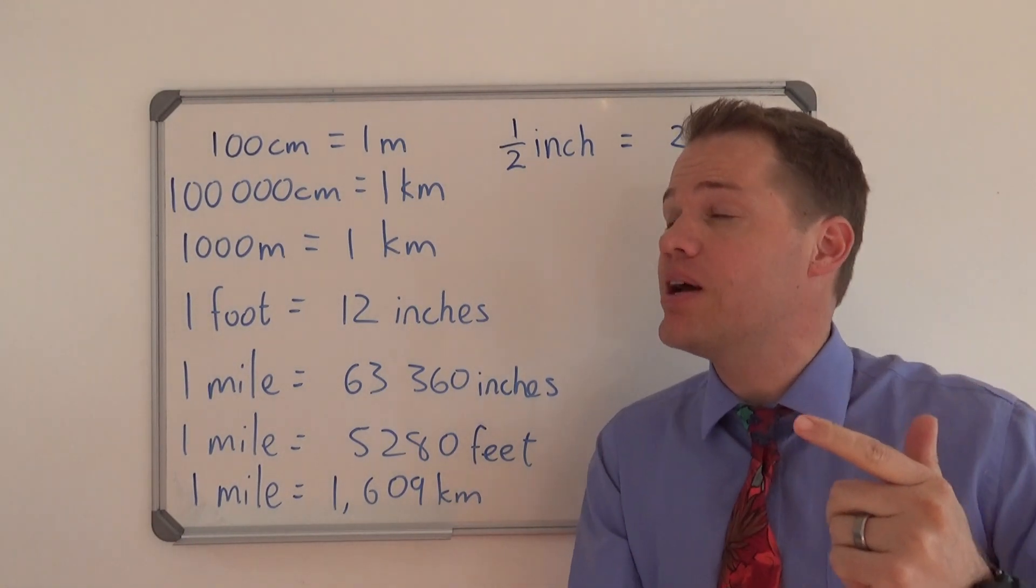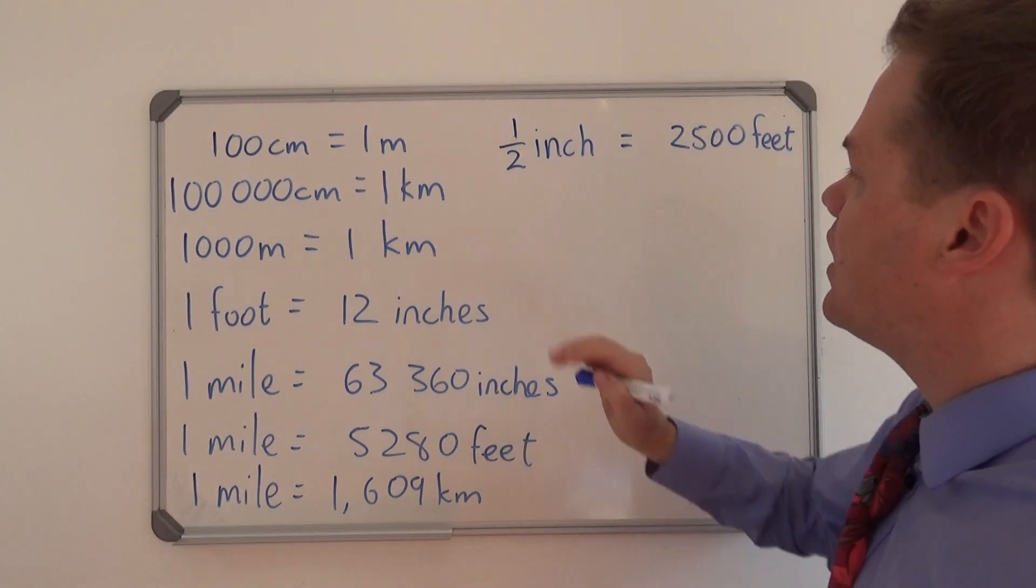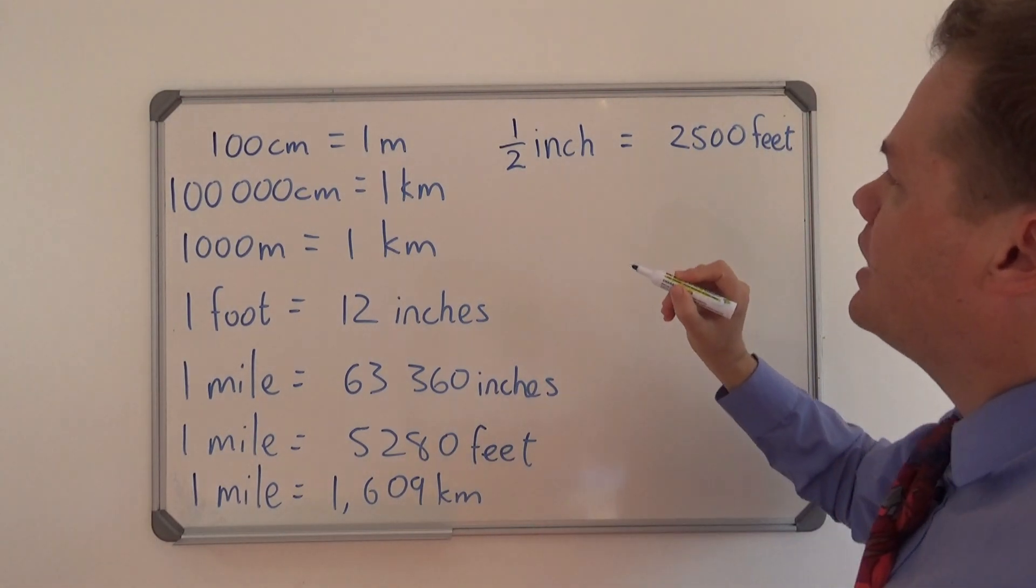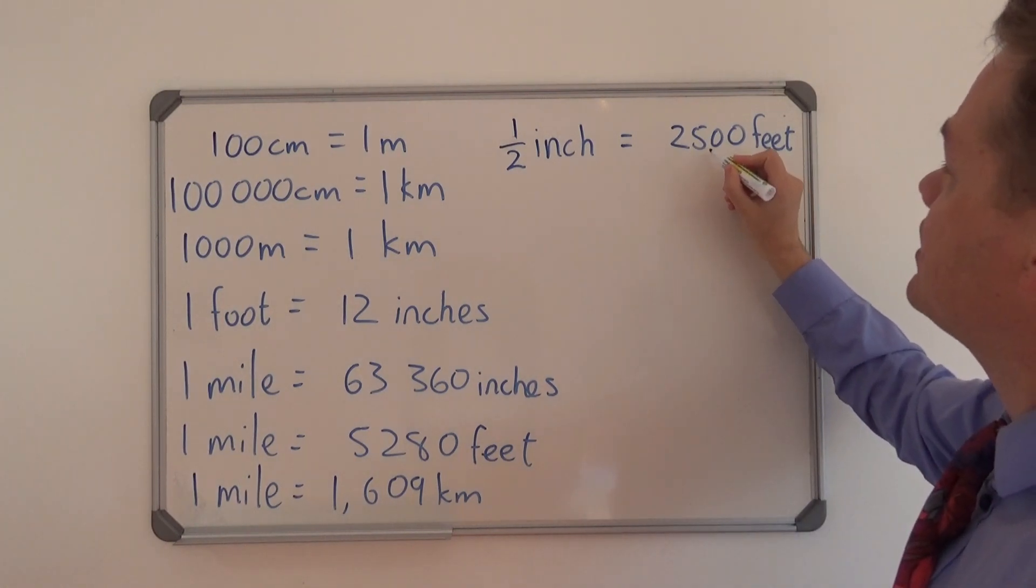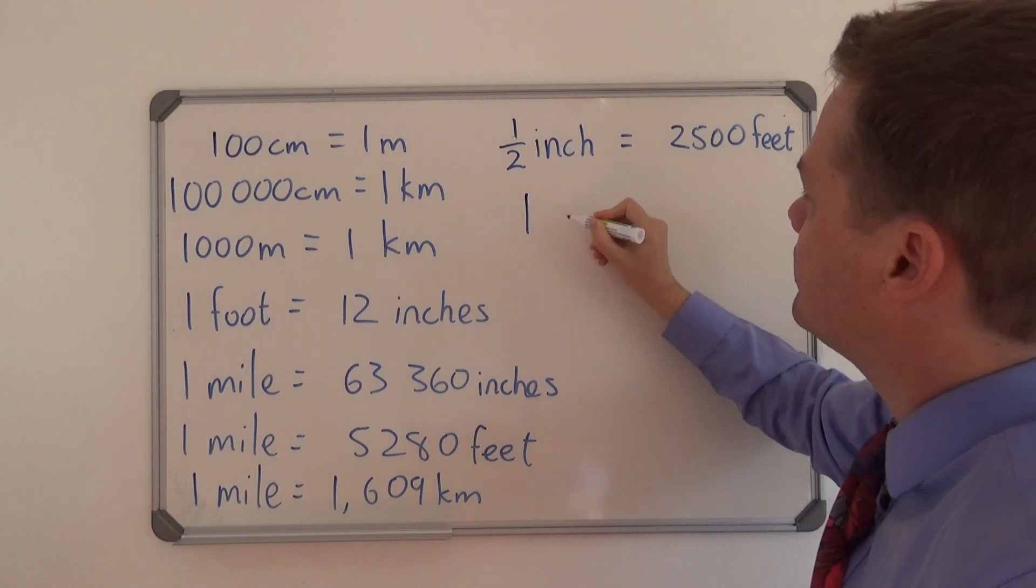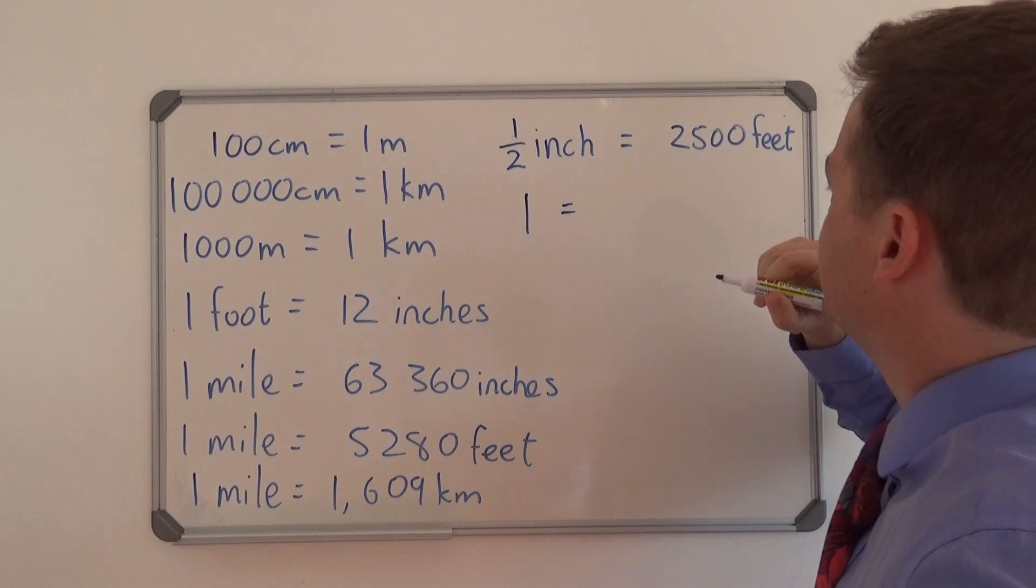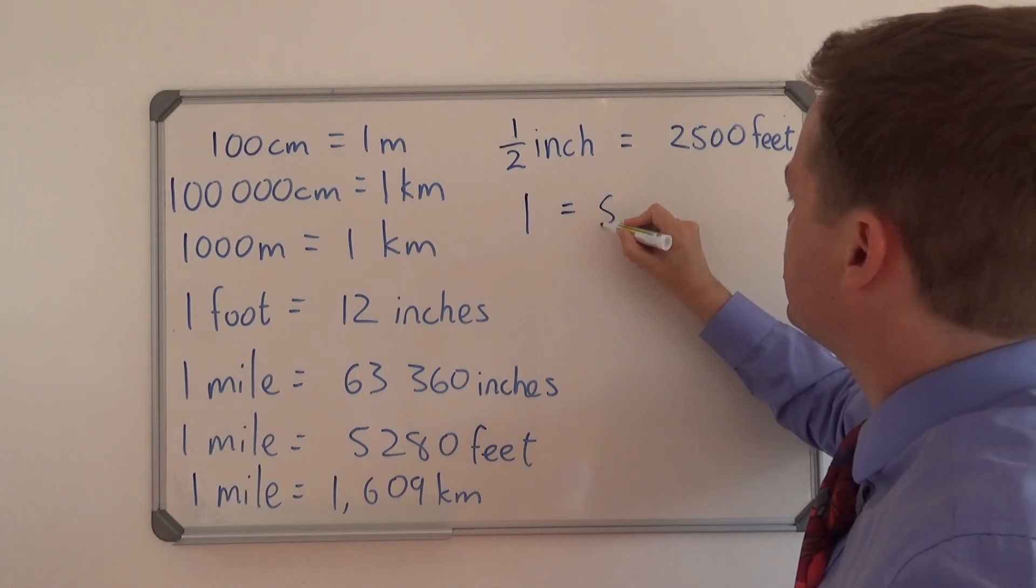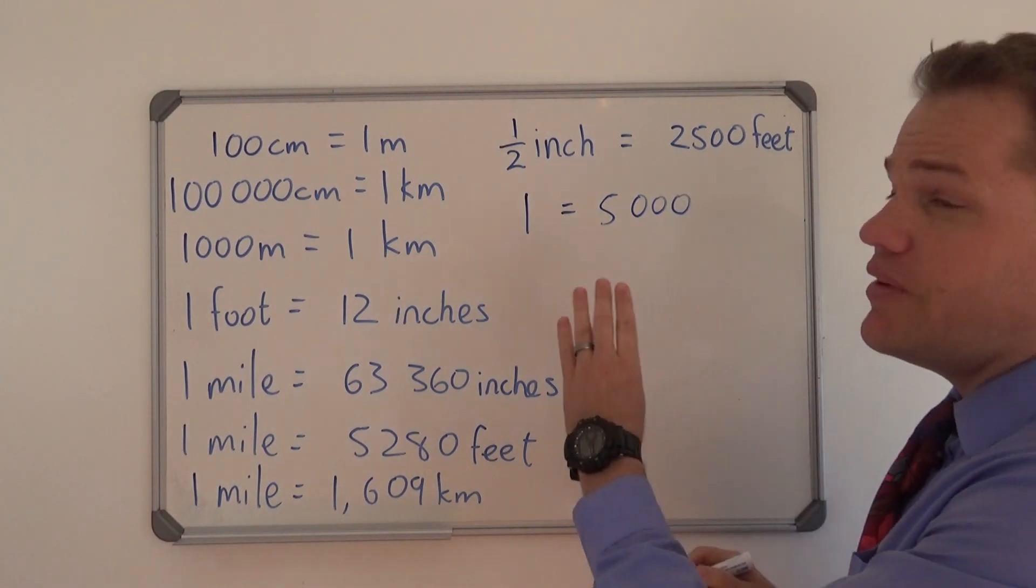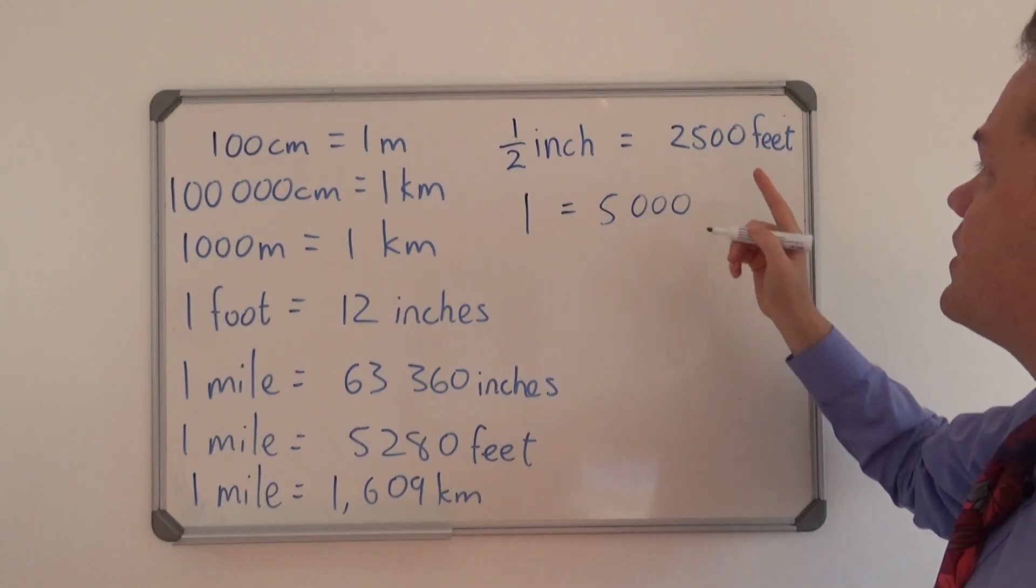We're going to do it the other way around. We want one unit of measurement on this side. So if we have a half here, we can say times 2. Then we have 1, but then we must say times 2 on this side as well. So then we have 1, a half times 2 is 1, and 2,500 times 2 is 5,000. But now we have to remind ourselves that we are not comparing apples with apples here, because this is inches and this side we have feet.